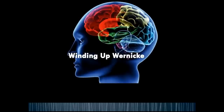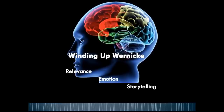Now let's talk about Wernicke. Broca's job is to filter out the familiar, so unfamiliar and unexpected is important. What makes Wernicke say 'I need to go get more information'? Wernicke is looking for relevance, emotion, and storytelling. His job is to take nouns and associate them with memories and images we have stored around that noun. So our copy must contain elements that are relevant, emotional, and presented in story-like structures in order for Wernicke to reach into our memories and find relevant, persuasive things.